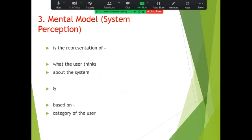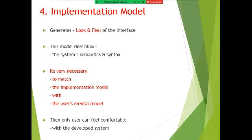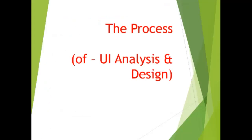The third is the mental model. System perception is the representation of what the user thinks about the system, based on the category of the user. The implementation model generates the look and feel of the interface. This model describes the system semantics and syntax. It is very necessary to match the implementation model with the user's mental model, so that the user can feel comfortable with the developed system.